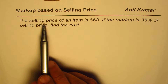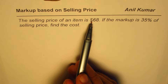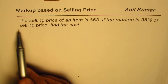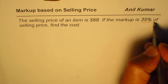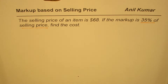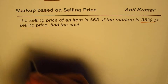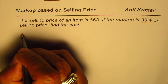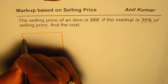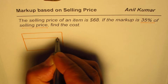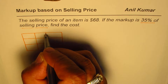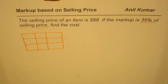The selling price of an item is $68. If the markup is 35% of the selling price, find the cost price. So that is the question for us. Let's make the regular 3x3 table and then solve this question. We know: cost plus markup equals selling price to start with.